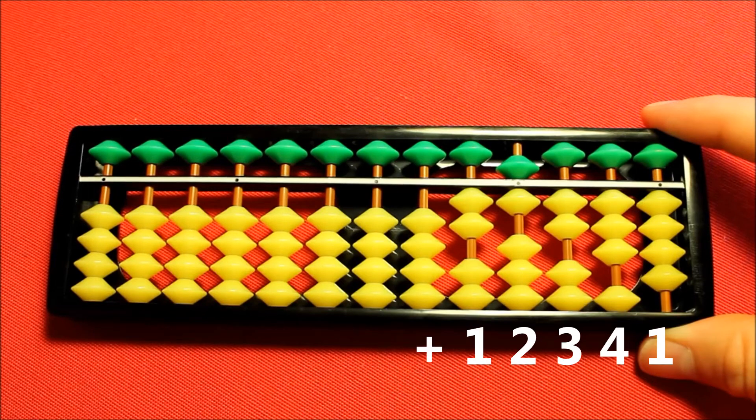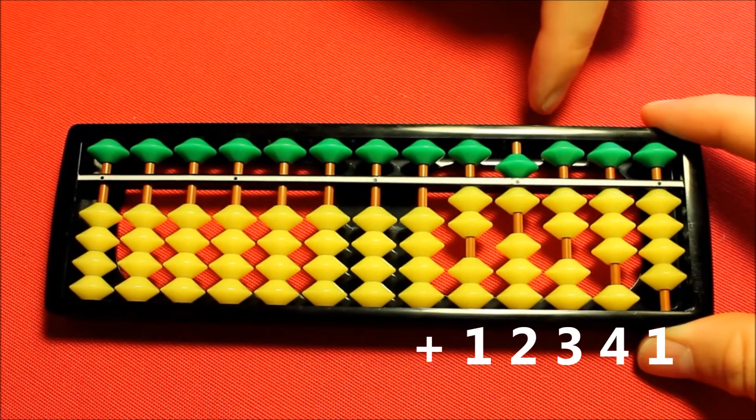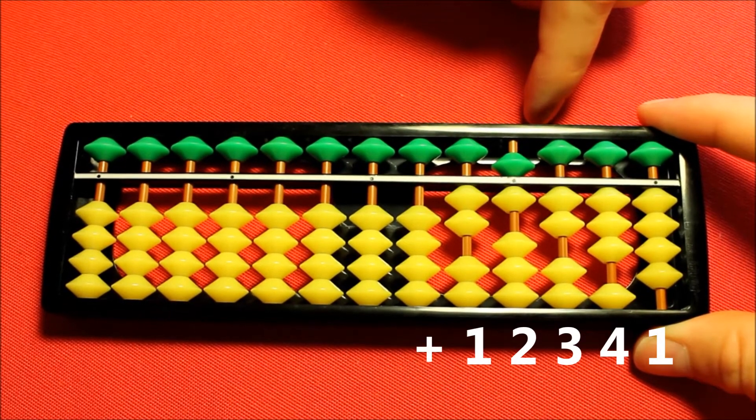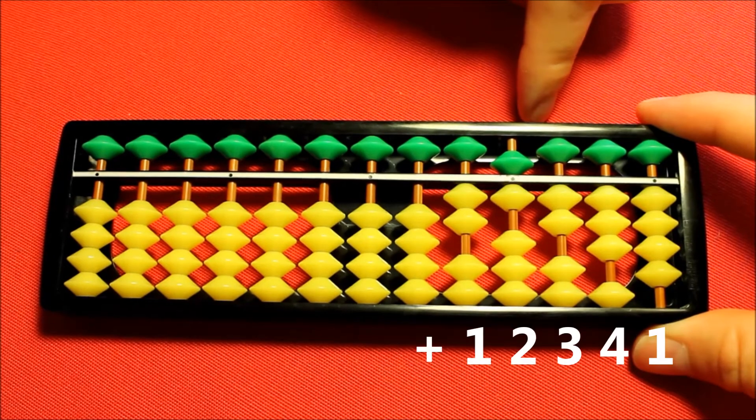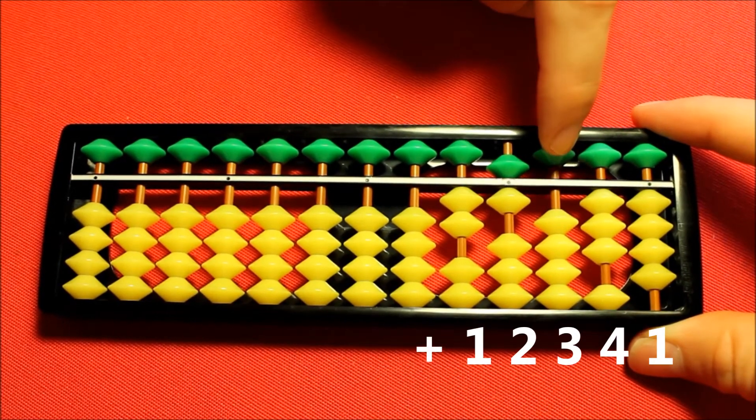Now to the next column I'm going to add three and I've only got two earthly beads that haven't been counted. So again I'm going to have to use the heavenly bead. In order to add by three I'm going to have to subtract two before I add my five.